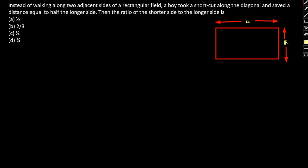So what the boy did is that instead of walking, the boy took a shortcut along the diagonal and saved the distance equal to half the longer side.